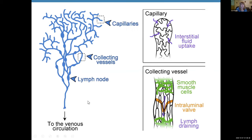Lymphatic capillaries collect lymph, then fuse together forming collecting vessels, which go through lymph nodes, and then to the venous circulation. They get bigger and bigger — into trunks and ducts.